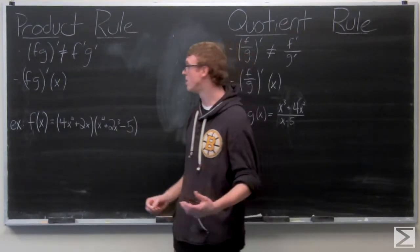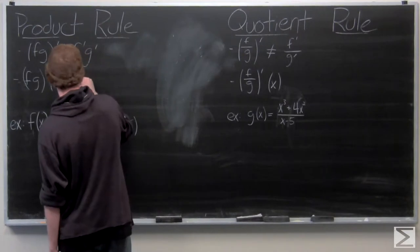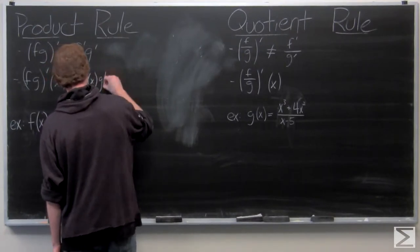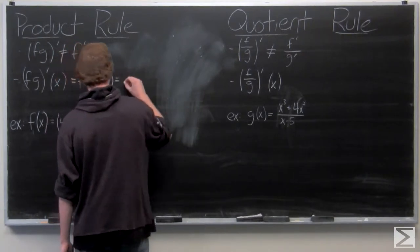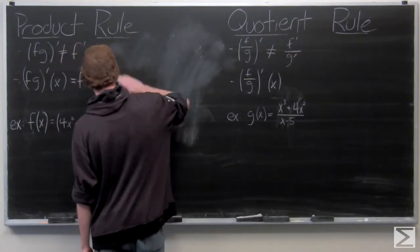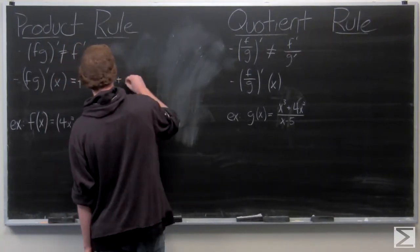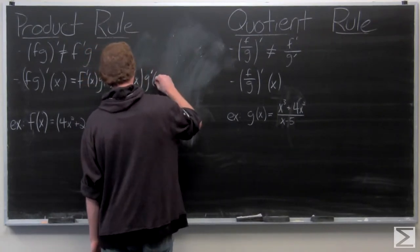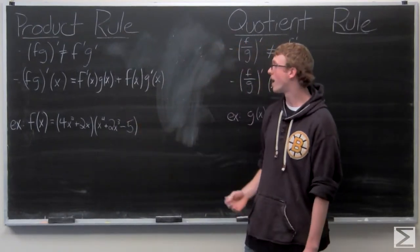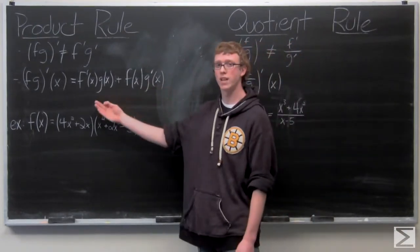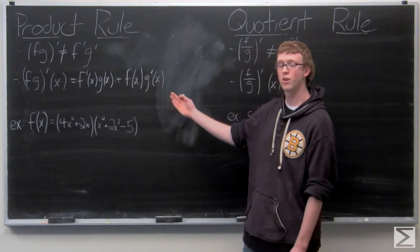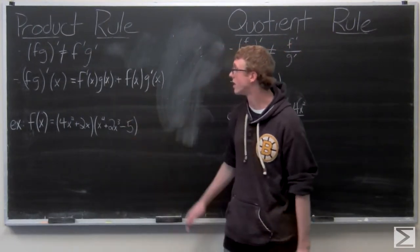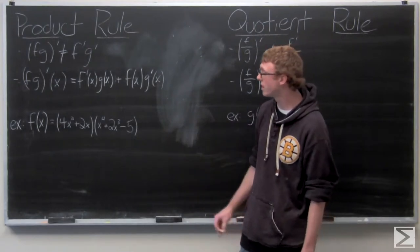So we have the product rule: (fg)' of x is going to be equal to f prime of x times g of x plus f of x times g prime of x. That's what the product rule tells us. We're going to immediately take a look at an example.